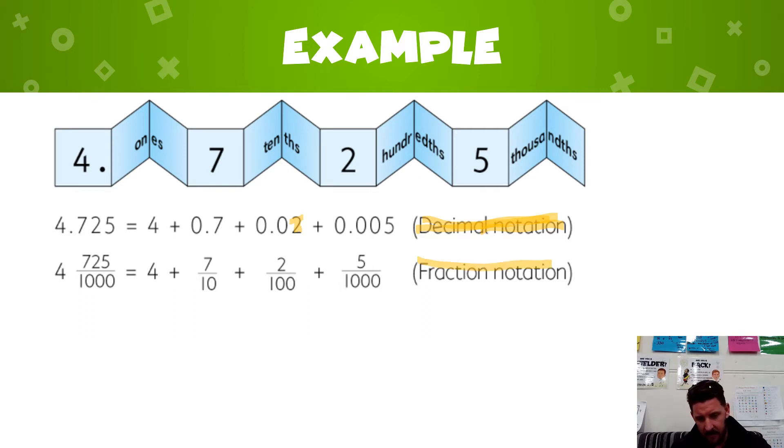The other way that we can do it is in fraction notation. In fraction notation, if we live in the tenths house, like we do here with our seven tenths, we put our seven over the top, and we know that it is tenths, and we put our ten down the bottom. Our two lives in the hundreds, so we put two at the top and a hundred down the bottom. Five thousandths, five over the top, thousands down the bottom.